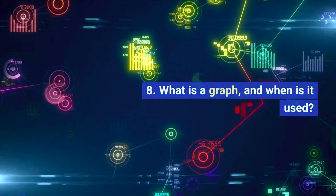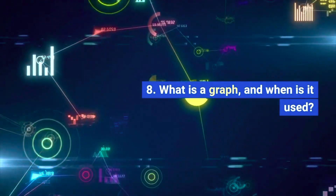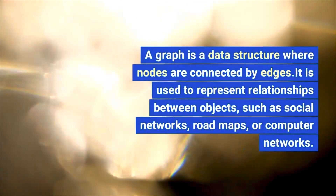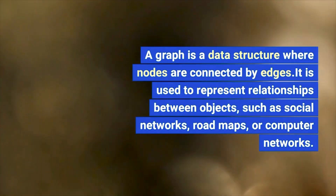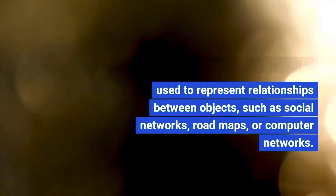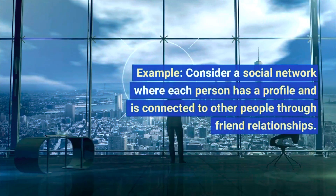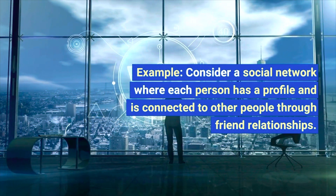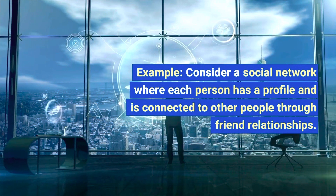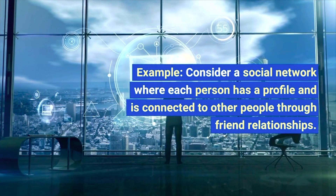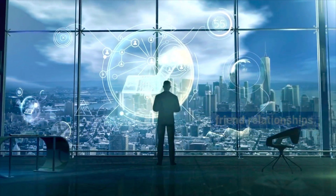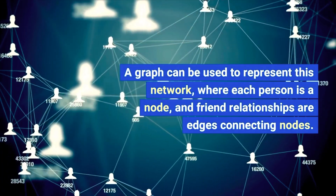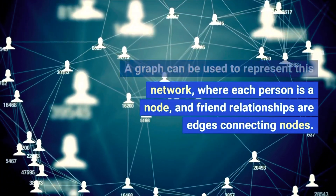Next question: what is a graph and when is it used? A graph is a data structure where nodes are connected by edges. It is used to represent relationships between objects such as social networks, road maps, or computer networks. For example, in a social network each person is a node and friend relationships are the edges connecting those nodes.